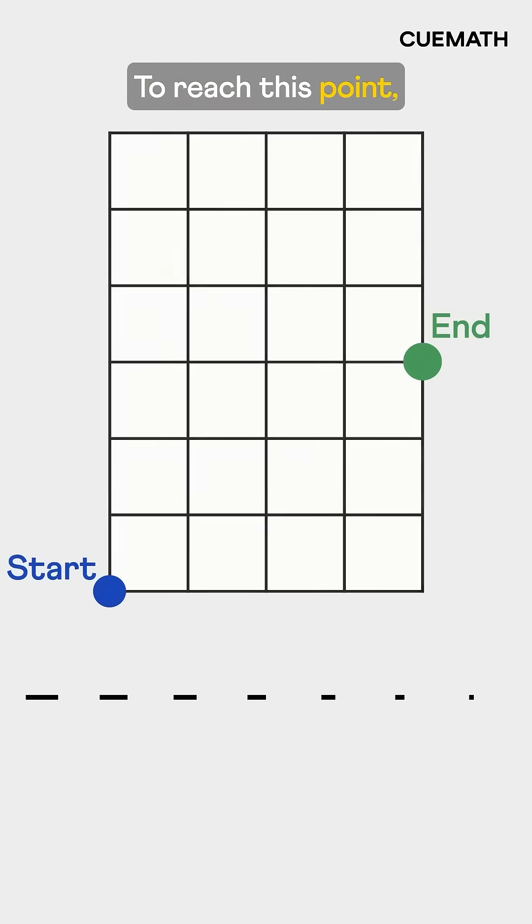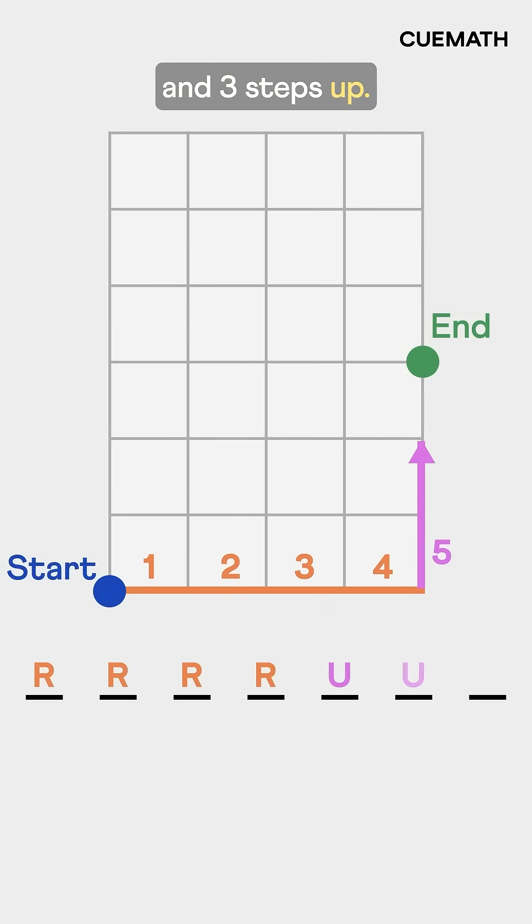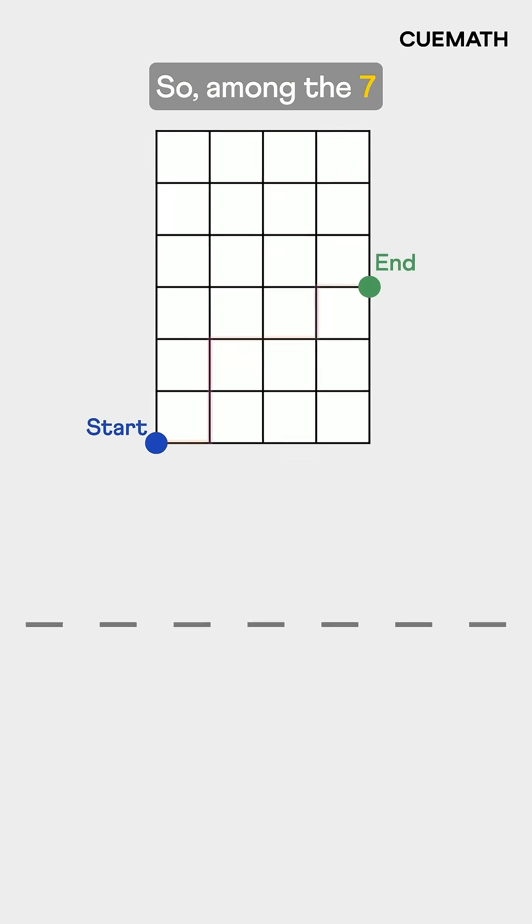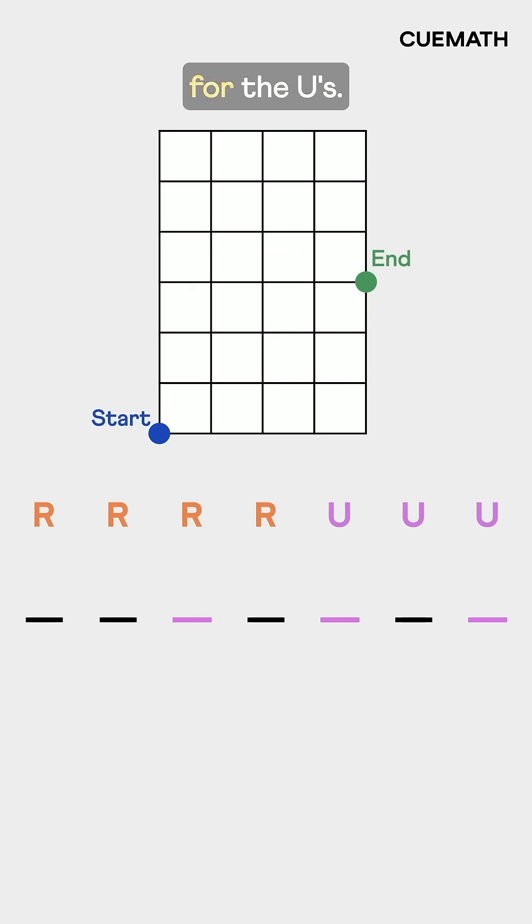To reach this point, we need four steps to the right and three steps up. That's a total of seven moves. Every valid path is just a different arrangement of these moves. So among the seven spots, we need to pick three spots for the U's.